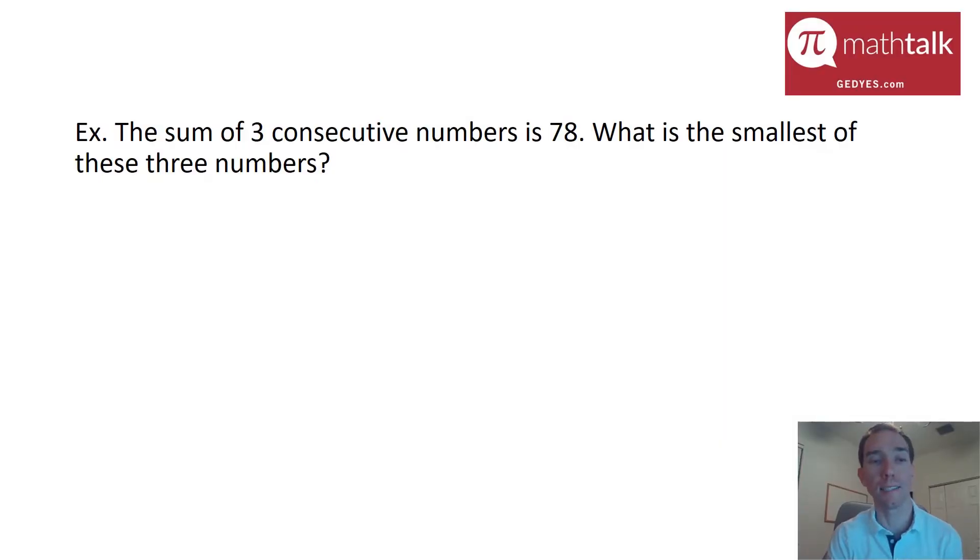We have a question that asks: the sum of three consecutive numbers is 78. What is the smallest of these three numbers? So I really like these types of problems. There's a couple ways you can actually go about solving them. The first way is you can set up an equation and solve. The second way is you can think outside of the box a little bit. That's the other way we're going to show you after the equation method.